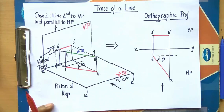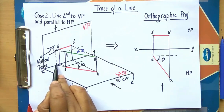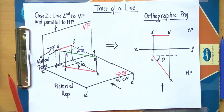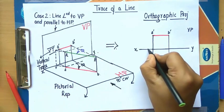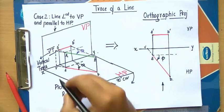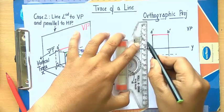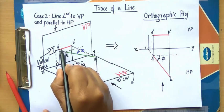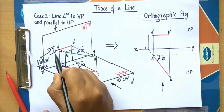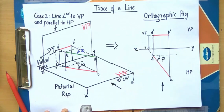We are interested in locating the vertical trace. Extend the top view line AB until it intersects the XY line at point V. Draw a perpendicular line from V. Then extend the front view A'B' along the direction of this perpendicular line, and you will have the vertical trace. This is the vertical trace, and this is the method you can employ to find its precise location.